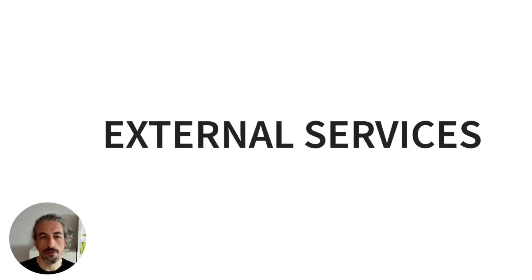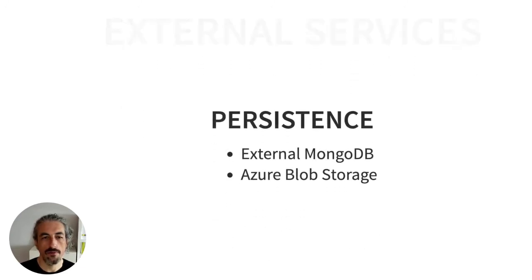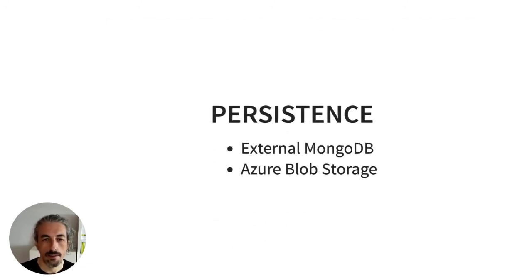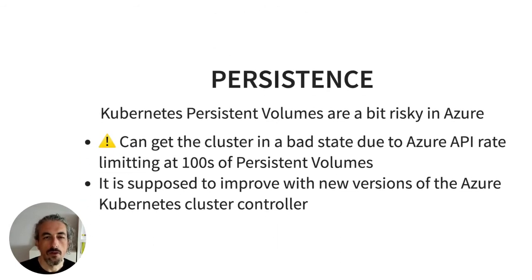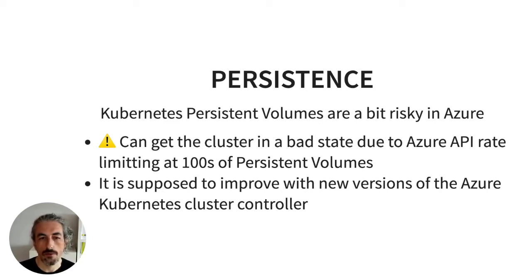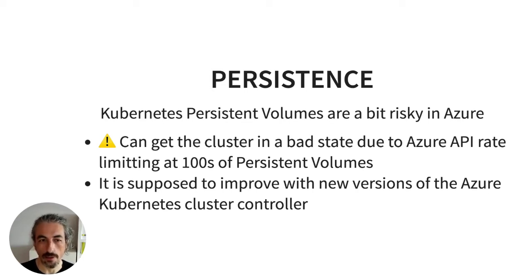For external services, we don't run everything on Kubernetes. We use external MongoDB and Azure Blob Storage for persistence. We don't use Kubernetes Persistent Volumes much because it's risky — especially on Azure, where we hit API rate limiting when having hundreds of persistent volumes. We stopped using them and switched to external storage options instead.